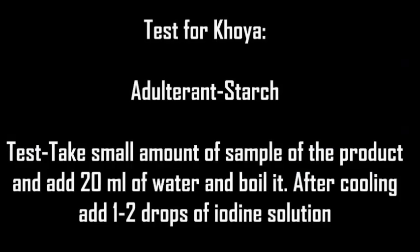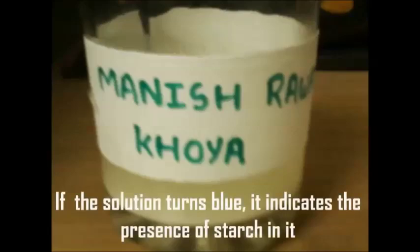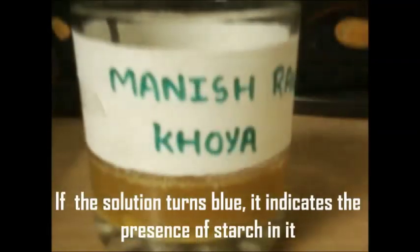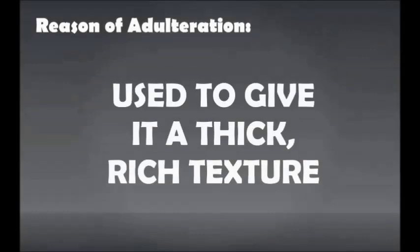Test for Khoya — adulterant: starch. Take a small amount of the product sample, add 20 ml of water, and boil it. After cooling, add 1–2 drops of iodine solution. If the solution turns blue, it indicates the presence of starch. Reason of adulteration: used to give it a thick and rich texture.